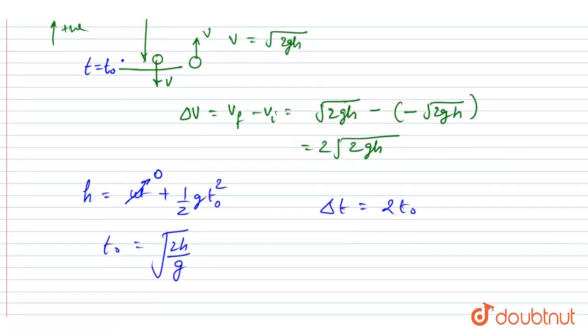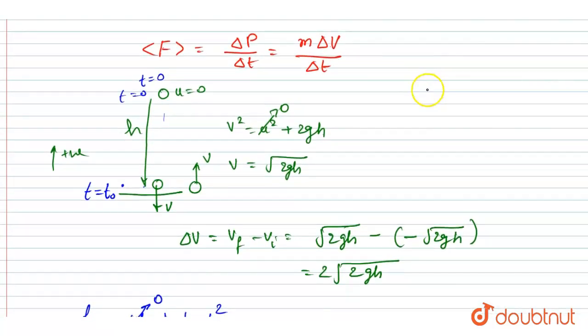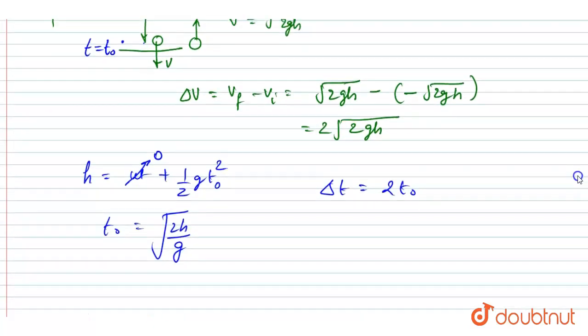So this will be the time. Just put the value here. So if you put the value, Δv is this, and to change this velocity the time taken is 2t₀.